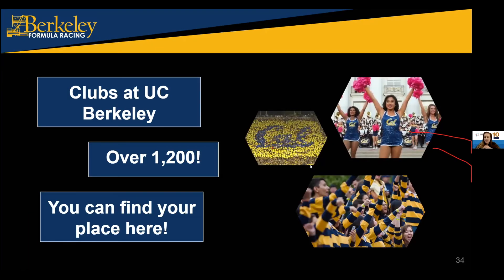Beyond academics, Berkeley is so diverse in terms of clubs. There are over 1,200 clubs and student organizations at Berkeley — you can absolutely find your place here. We all found Berkeley Formula Racing and that has become our home, but there are so many different cool things to be involved in. Truly, you could go to the school for 50 years and not be able to see all the different opportunities, decals, clubs, and organizations we have going on.